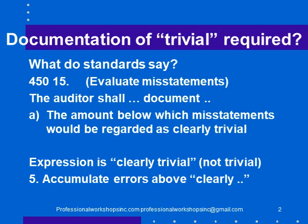Section 5 says accumulate errors above clearly trivial. So we document what is clearly trivial and ignore those in the file, then accumulate all other errors that are above clearly trivial.